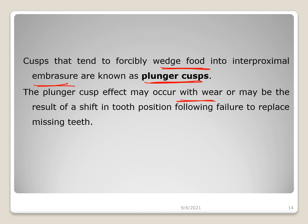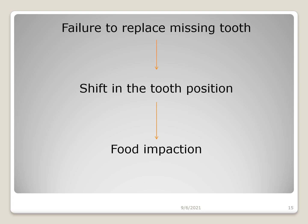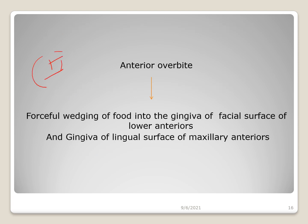The plunger cusp effect may occur with wear or may result from a shift in tooth position after failure to replace missing teeth. If a missing tooth is not replaced, the cusps can entrap food particles onto the opposing tooth or between opposing teeth in the opposite arch. Failure to replace a missing tooth causes mesial or distal drift, leading to food impaction via the plunger cusp in the opposite arch. Another mechanism is anterior overbite, where forceful wedging of food into the gingiva of facial surfaces of lower anteriors and lingual surfaces of maxillary anteriors occurs — a deep bite causing food impaction in the opposite arch.